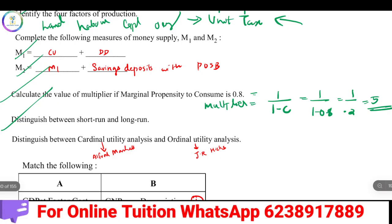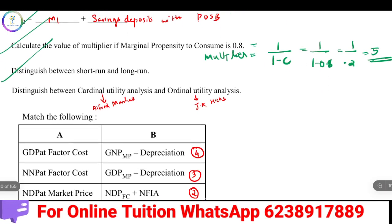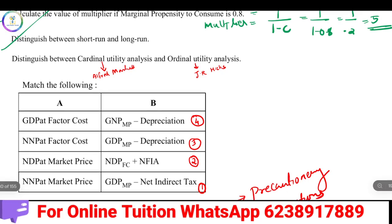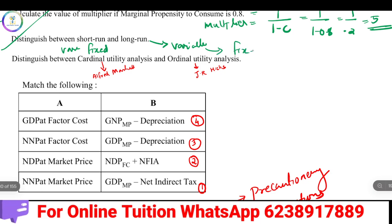Distinguish between short run and long run. Short run is a short period of time where there are both variable and fixed inputs — this is the variable proportion production function. Long run is a long period of time where all inputs are variable — this is the fixed proportion production function.